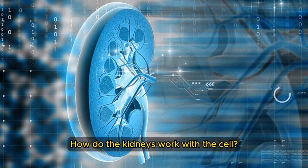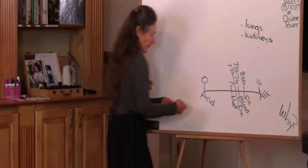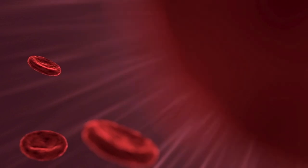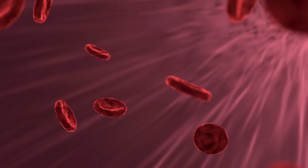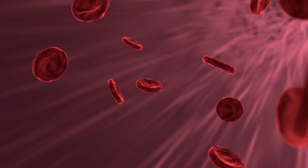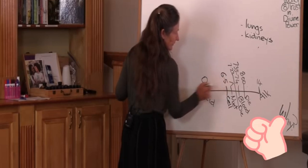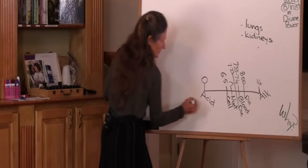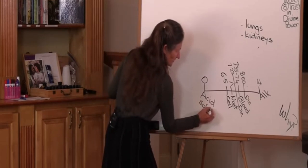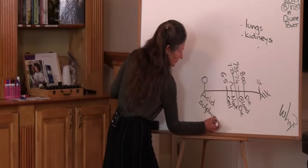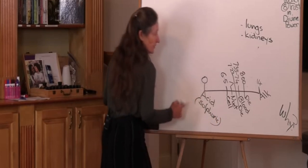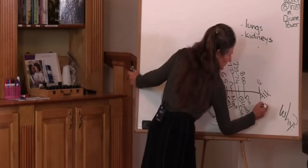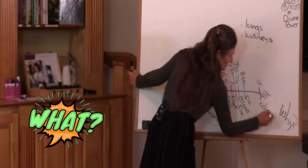How do the kidneys work with the cell? Even though the blood cannot change, the pH of the cell can. The pH of the cell should be approximately 6.5. That's very slightly acid, and there is a reason for that. The most acidic substance is sulfuric acid, and sulfuric acid travels at the speed of light. The most alkaline mineral is calcium, and on the scale of speed, calcium doesn't even move.